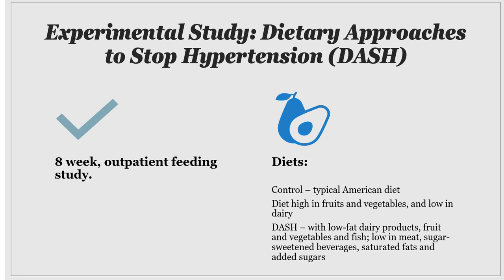The drawback with experimental studies is they're hard. An outpatient feeding study means you have to control everything a person eats, which is really difficult outpatient — typically it has to be done inpatient. You have to truly monitor all behavior to be able to say it was the food. If you're not controlling everything, someone might be sneaking cake at night while on the DASH diet, which limits added sugars and high saturated fat. So as powerful as experimental studies are, they are hard to manage.